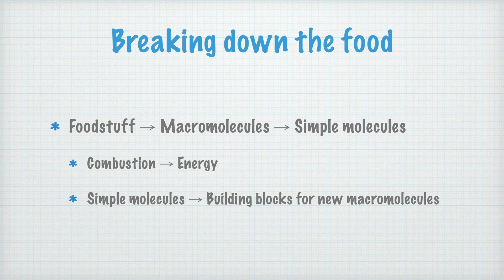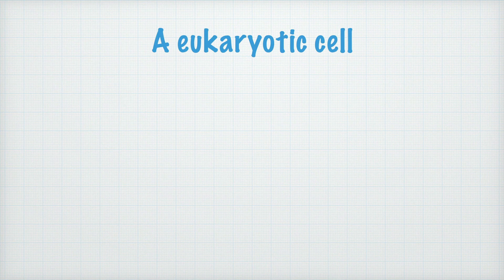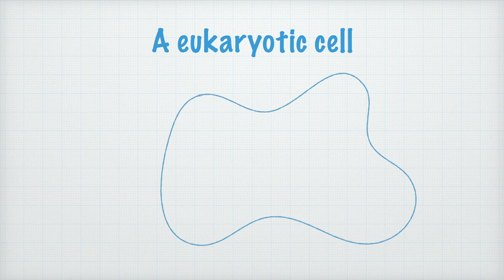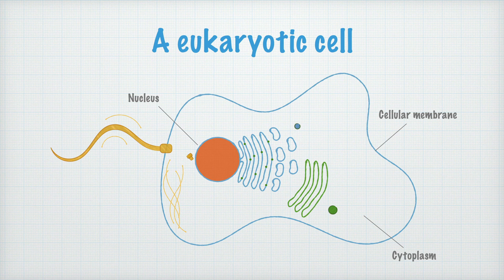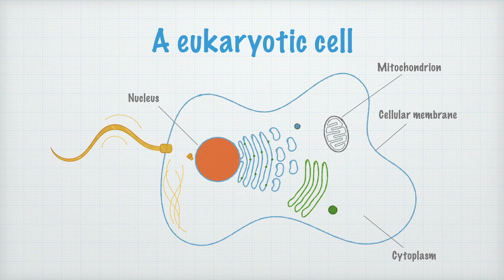To understand this, we must first have a look at the anatomy of the cell. This is a so-called eukaryotic cell — a cell with a nucleus. This is how I draw a typical eukaryotic cell. It's enclosed by a cellular membrane. Since it is a eukaryotic cell, it has a nucleus. Between the nucleus and the cellular membrane, we find the cytoplasm, the intracellular fluid where all of the other cell components float around. What we will focus extra on is the mitochondrion. Quite often, at least in the biology courses, the mitochondrion is just called the cell's power plant.